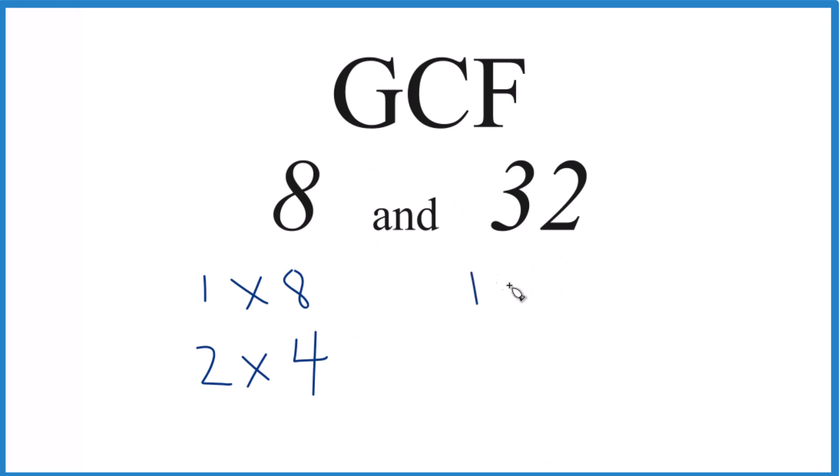For 32, we have 1 times 32, 2 times 16, 4 times 8, and I think that's it. These are the factors for 32.